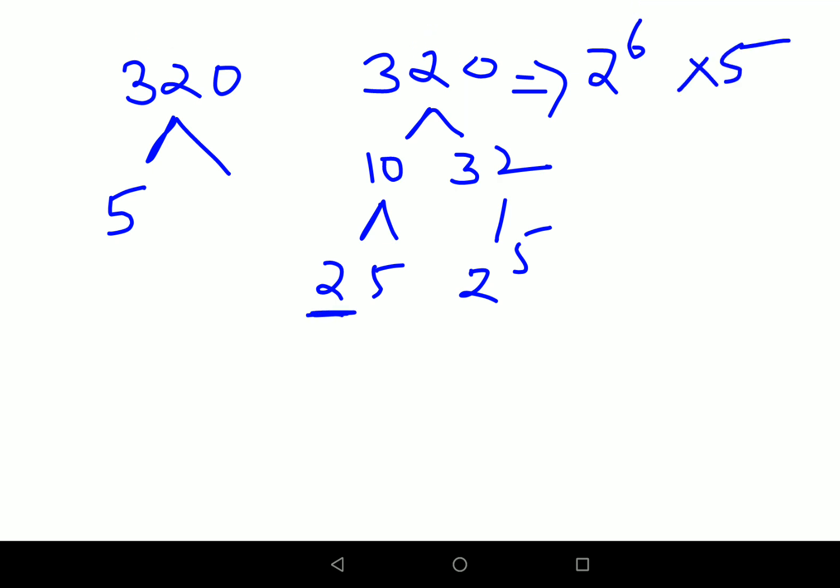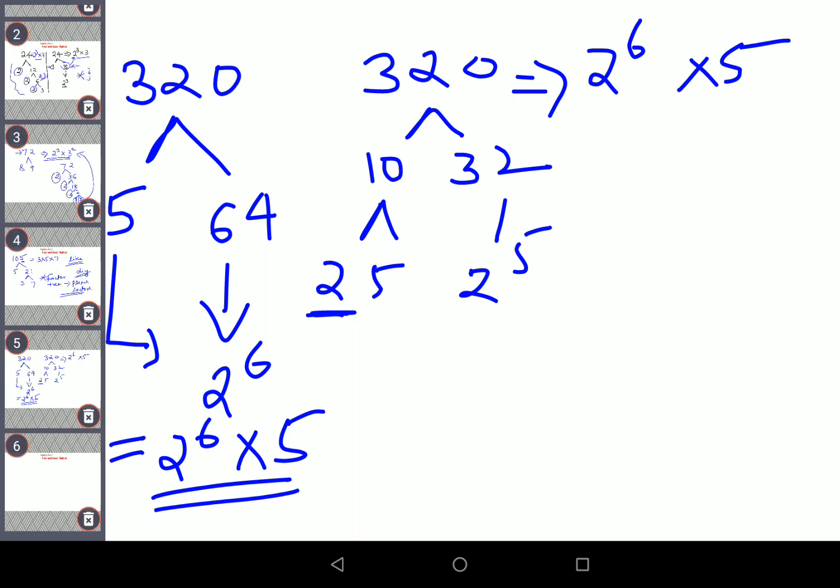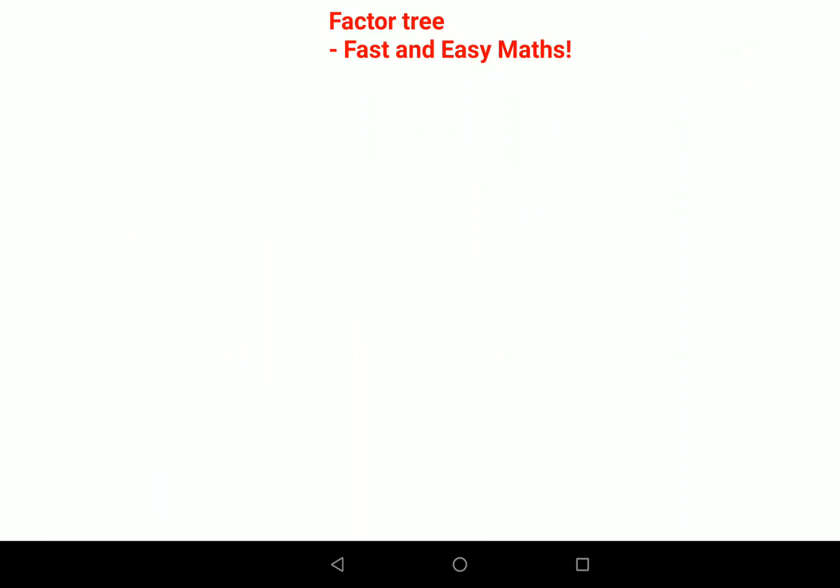So basically this gets you 2 raised to 6 because there is one more 2 to be considered over here and 5. But since I did it with 5, here what I got is 64. So now again this is directly 2 raised to 6 and this is 5. So basically here also I'm getting 2 raised to 6 into 5 as my prime factors. So you saw either ways you can do it, it is just about choosing the one method which is clicking to you.